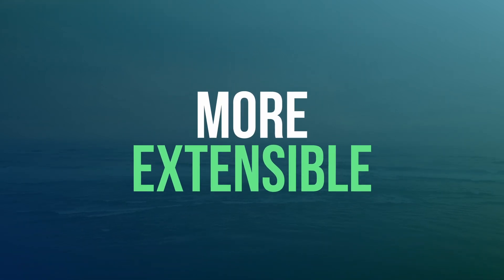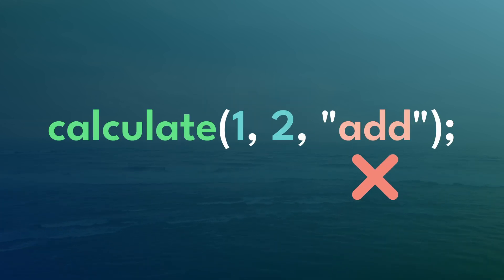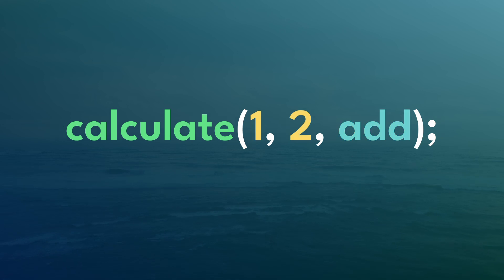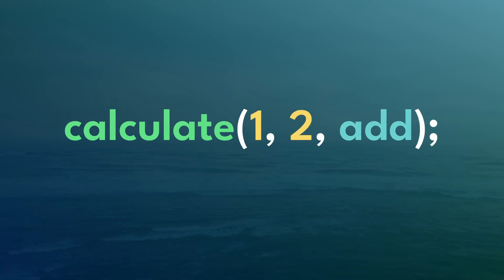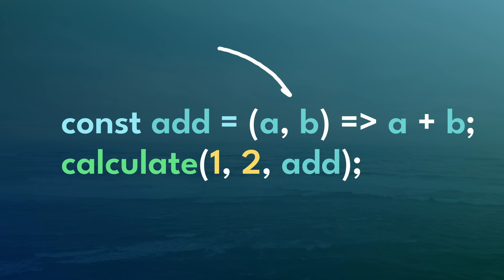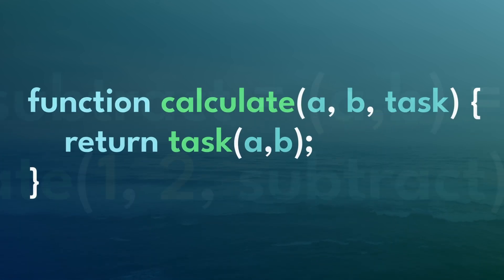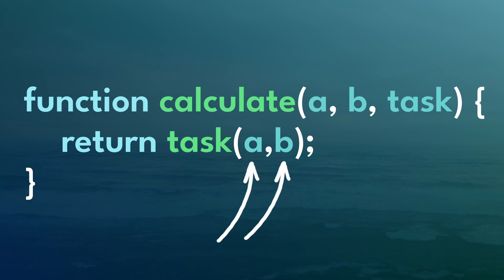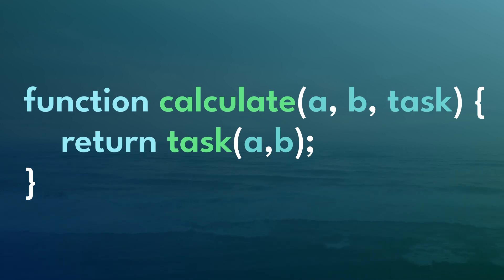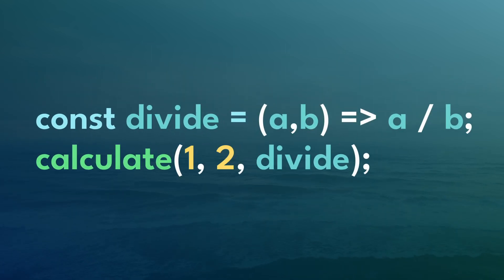Instead, we can do this in a more extensible way. For our third parameter, we can use something called dependency injection, which is a fancy way of saying we're going to pass in the functionality. So our third parameter can be a function — a user can pass in an add function or a subtract function — and then we pass the first two arguments into those functions. That way, later down the line, if we want to multiply or divide, we don't have to change the initial calculate function.